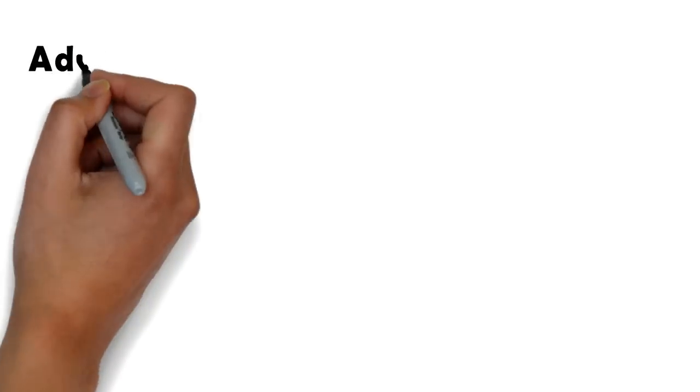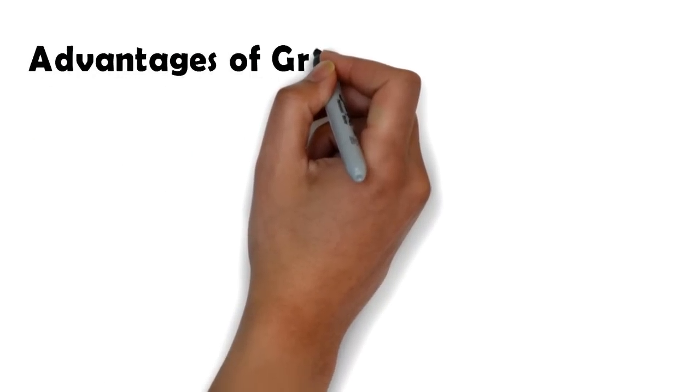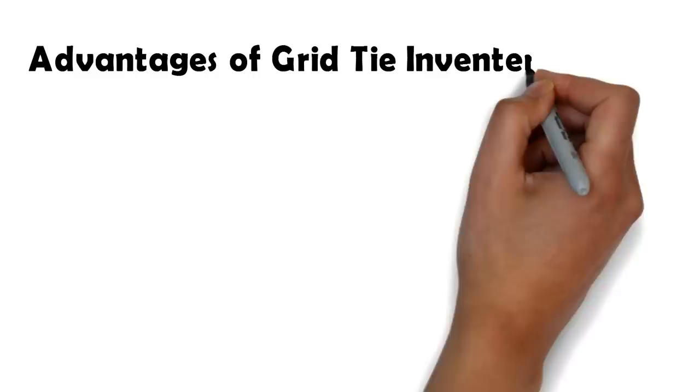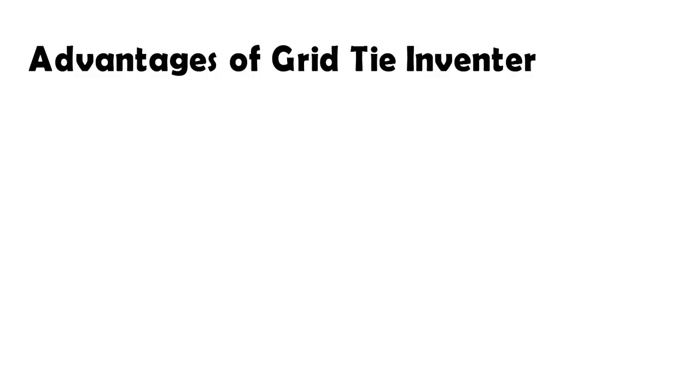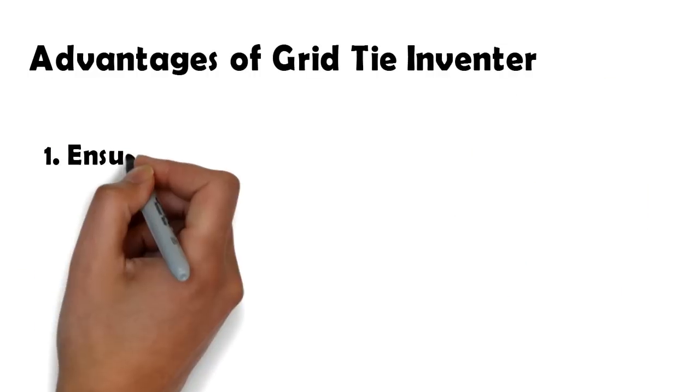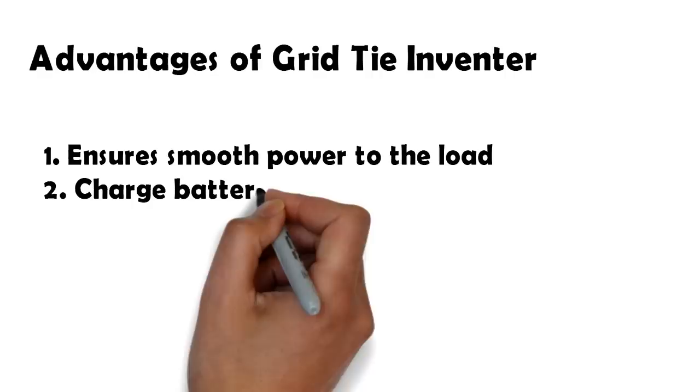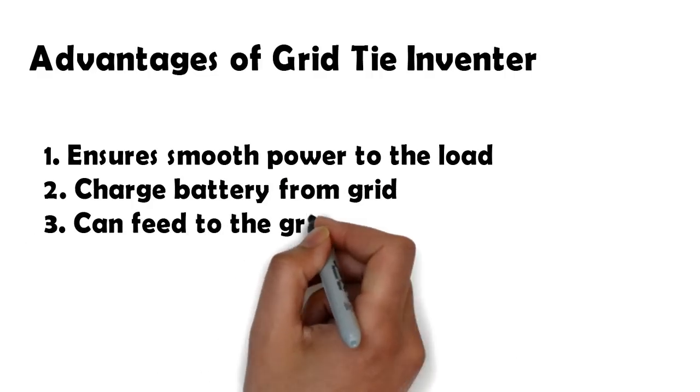The advantages of grid-tie inverters are as follows. Number one, it ensures a smooth power to the load—that is, it has the ability to top up from either the grid or the battery bank in case the panels are not producing enough to meet the load.